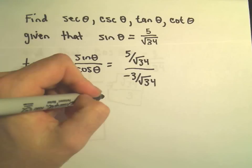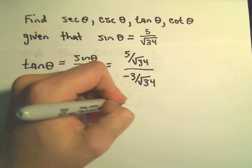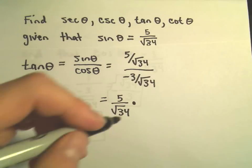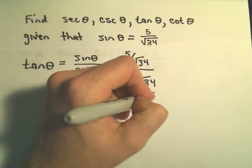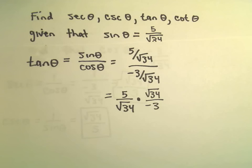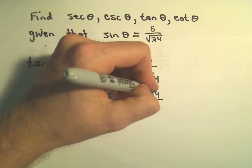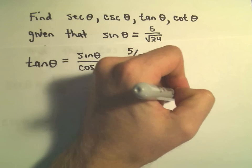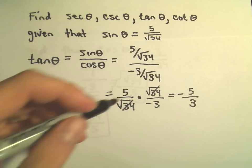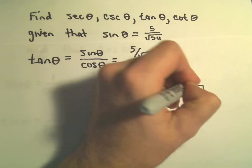If you have a fraction divided by a fraction, you can leave the one on top alone, take the denominator, flip it, and turn it into multiplication. Since it's multiplication, the square roots of 34 cancel out, and we're left with -5/3. So tangent of θ is simply -5/3.